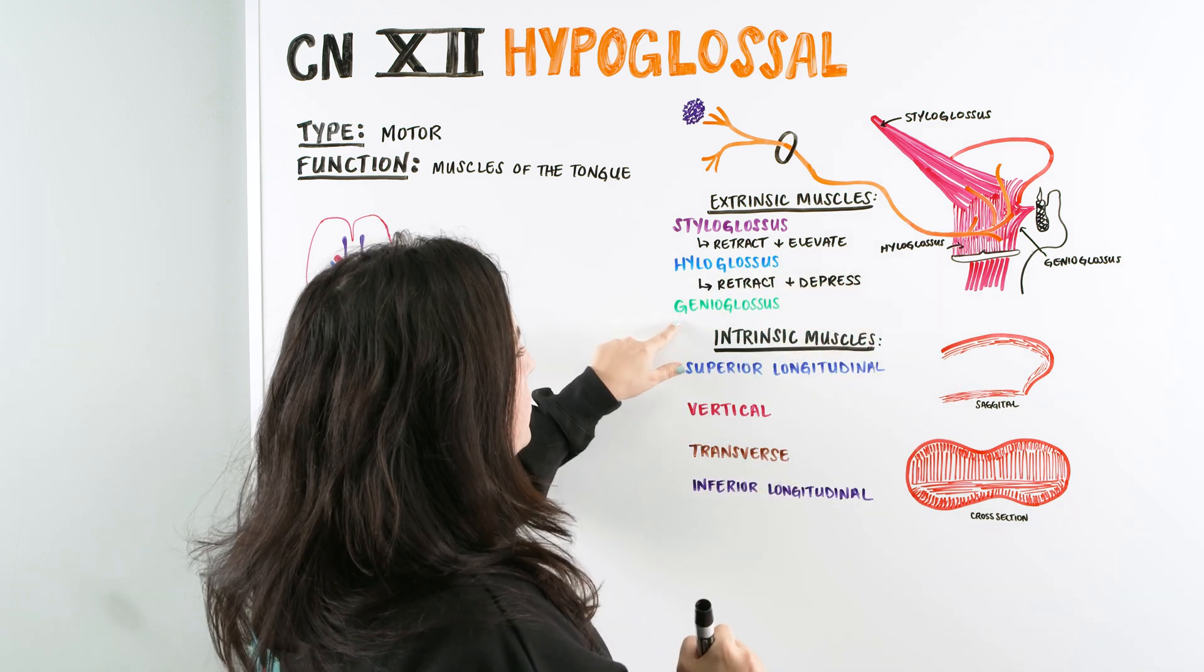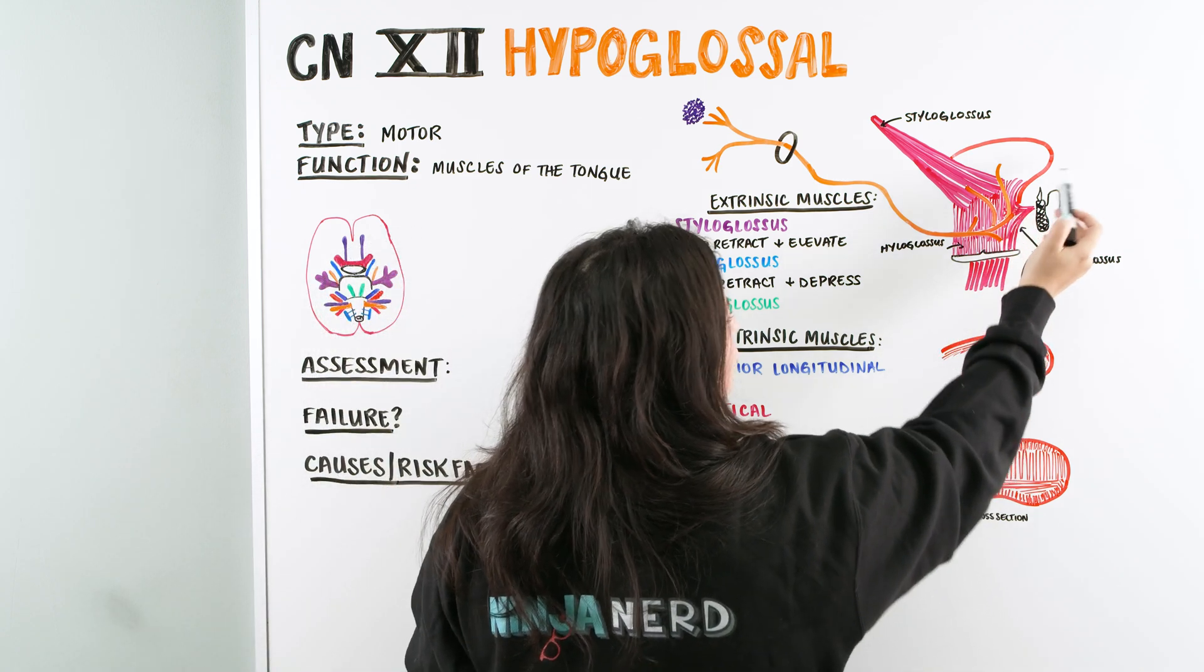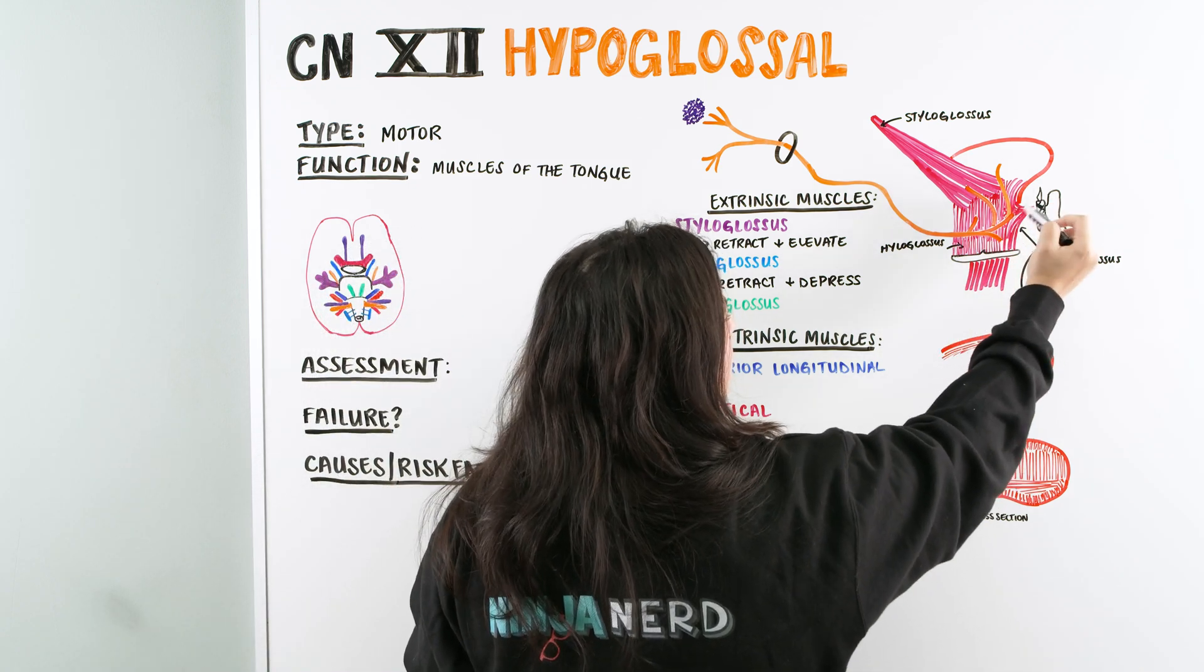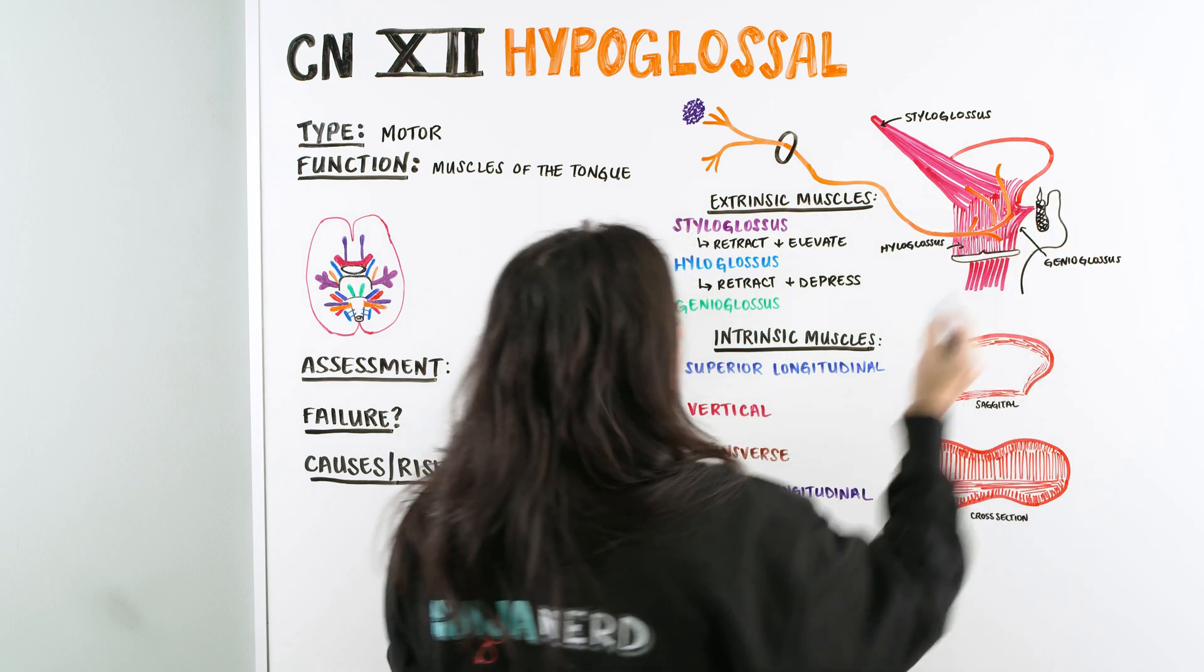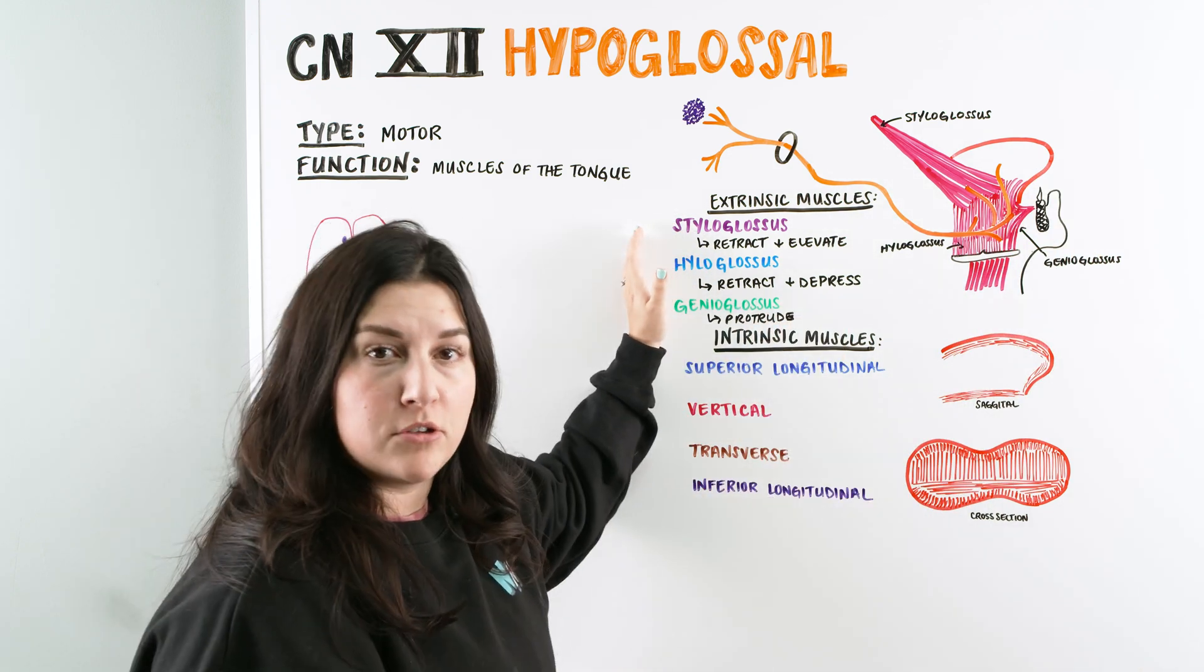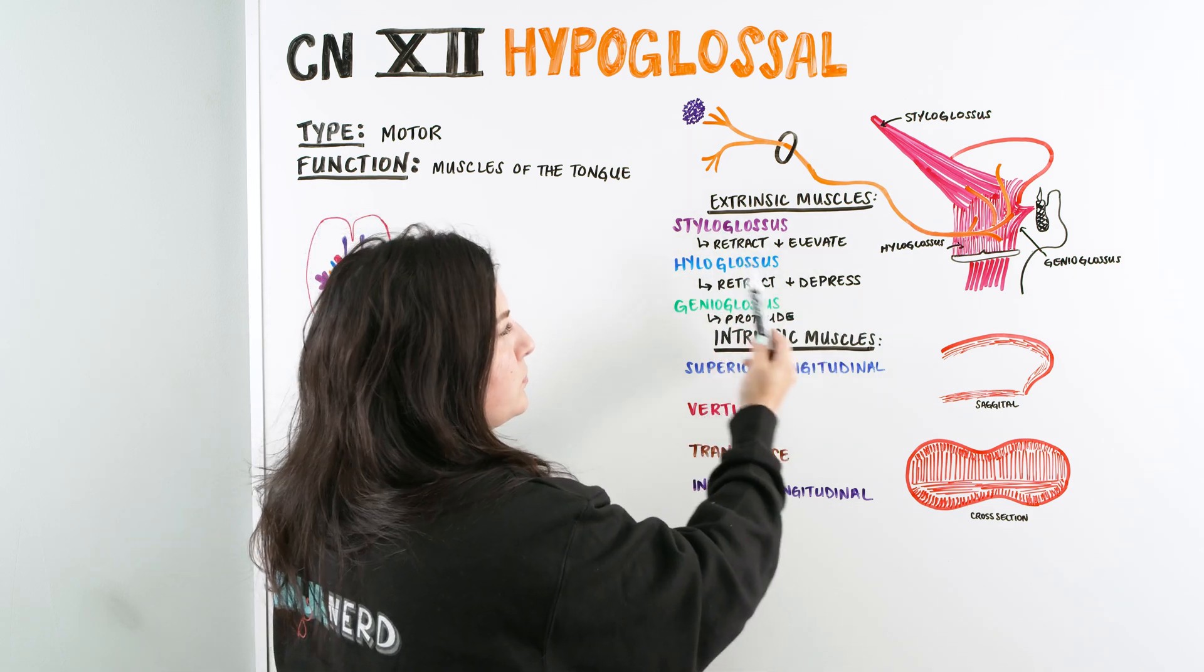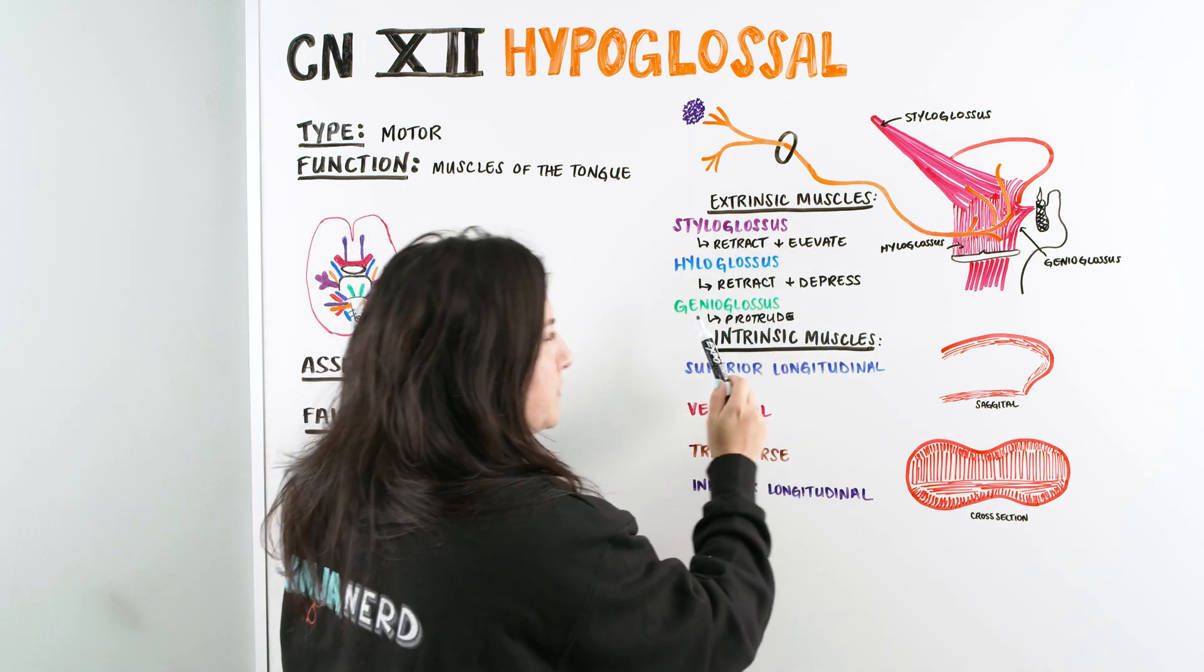And then we have our last one, which is our genioglossus. So our genioglossus is here, and this actually helps make the tongue protrude. It's a very odd shape, but when it does, it helps the tongue protrude out. So now, we understand that there are some extrinsic muscles, right? The styloglossus retract elevate, hyloglossus retract depress, and the genioglossus helps protrude.